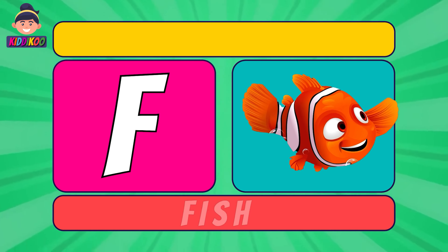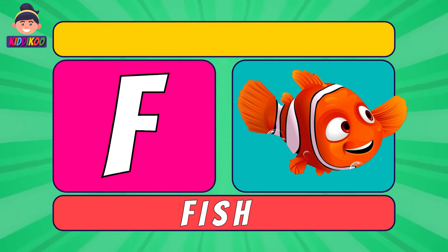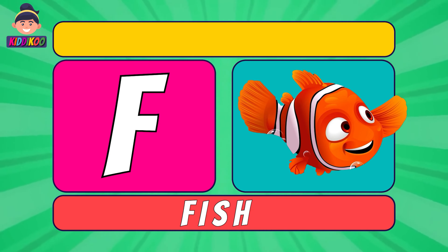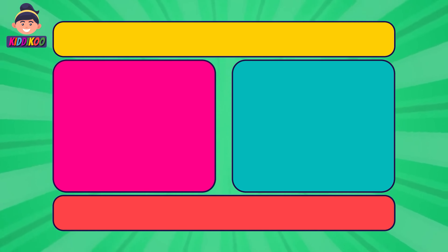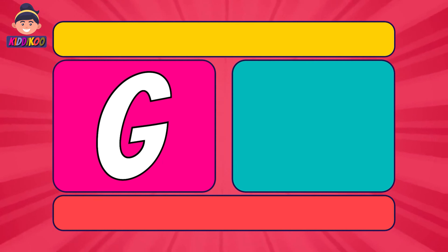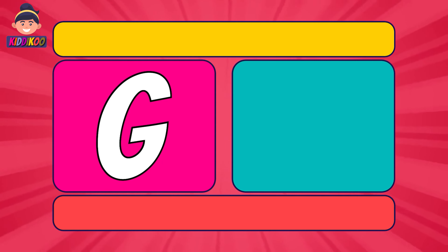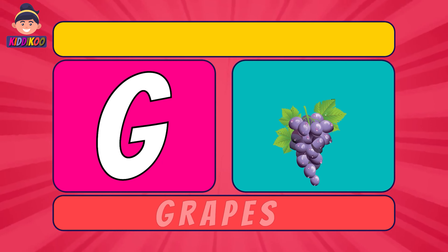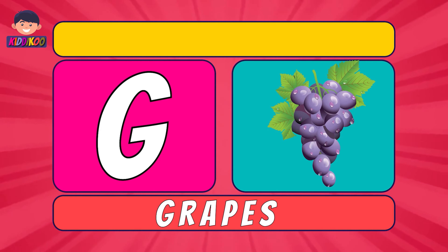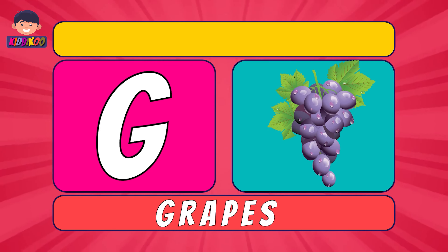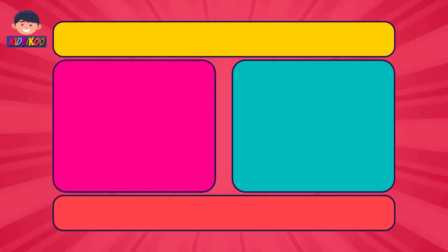Next letter is F. F for Fish. Fish. Next letter is G. G for Grapes. Grapes.